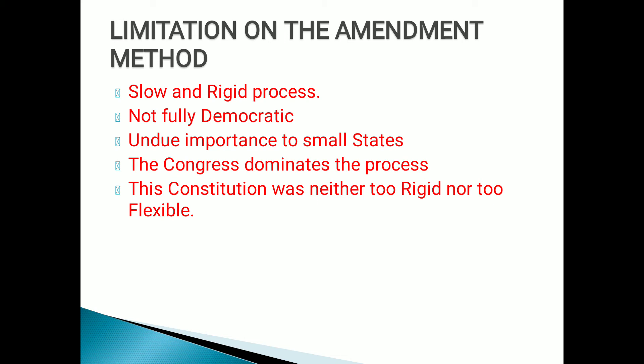The system is not fully democratic, as there is no provision for a direct popular referendum on amendments or for proposals of amendments by popular vote. Each state, whether big or small, has an equal role in the process of amendment. Any combination of 38 small states can make an amendment effective; conversely, 13 small states can defeat any amendment. The Congress dominates the process. The Congress, the President, and the Supreme Court acting together or separately can conspire to enhance the power of the central government at the expense of the states. The Congress has the power to initiate the process, decides the mode of ratification, and fixes the time limit, hence unduly dominating the amendment process.